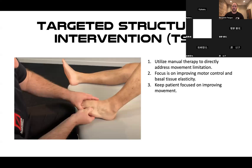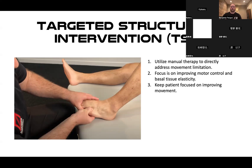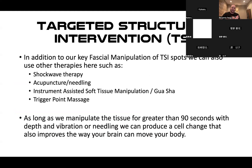All of our sensory nerves — Pacinian corpuscles, free nerve endings, Golgi tendon organs — are stuck in connective tissue. For them to send a clear signal to the brain, that connective tissue has to be flexible and elastic. If I have scar tissue or a lot of tension in an area, I can use specific manual therapy to the deep fascia, creating flexibility in the tissue that helps the nerves speak with the brain and improve motion. We call this type of treatment a Targeted Structural Intervention, or TSI — using manual therapy to directly address movement limitation. We're not using TSI to address pain; we apply it to specific spots that control a particular movement to improve controlled range of motion.